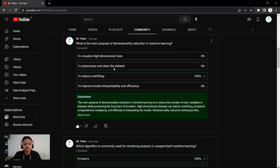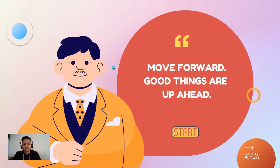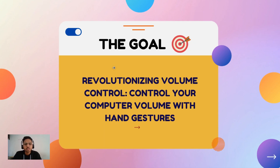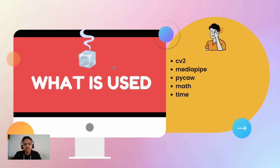You can subscribe to our channel where you get regular postings of awesome projects and data science terminologies. So let's move ahead. The goal of our project is to revolutionize volume control — we can now control our computer volume with the help of hand gestures. Here is the set of things I've used in this project. The first is the libraries I imported: cv2, MediaPipe, PyCore, math, and time.